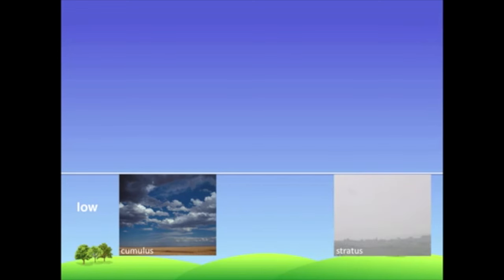Stratus clouds are also found low in the atmosphere. In fact, sometimes they touch the ground and are called fog. They are uniform gray in color and cover most of the sky.